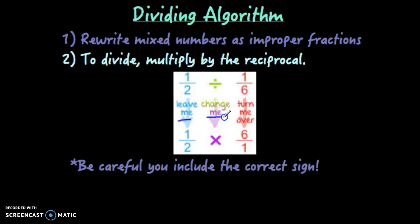The division symbol, you change it to multiply. And then lastly, the fraction, you flip it over, you make it the reciprocal. So if it was 1 over 6, you flip it to 6 over 1, and then you just multiply. Make sure you're including the correct sign.